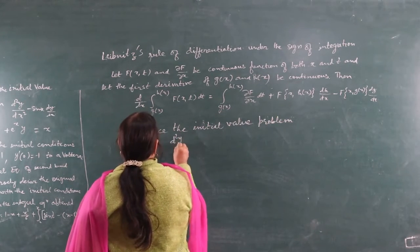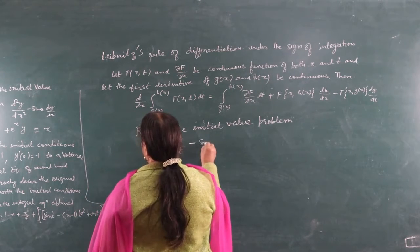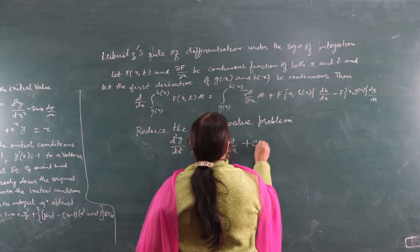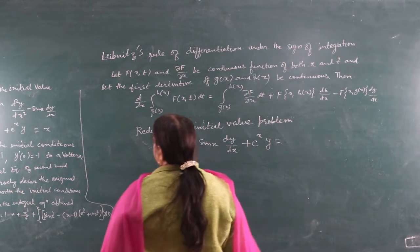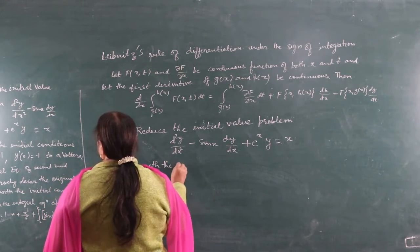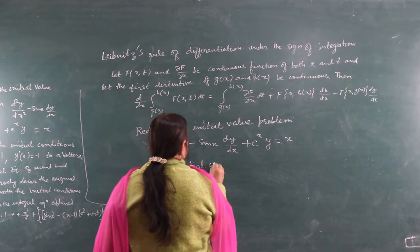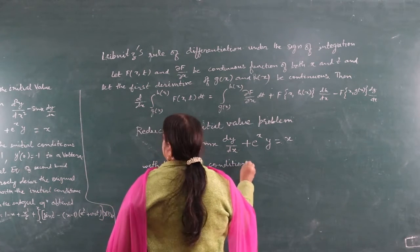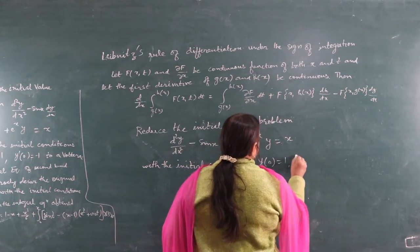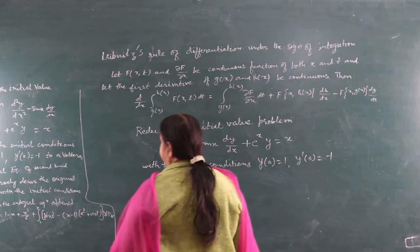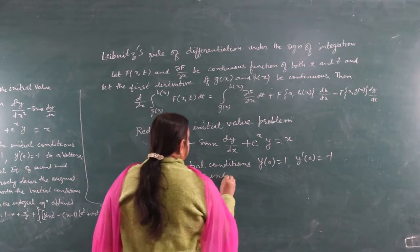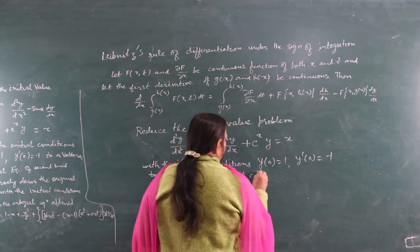Convert: d²y/dx² - sin(x) dy/dx + e^x · y = x, with initial conditions y(0) = 1 and y'(0) = -1, to a Volterra integral equation of the second kind.